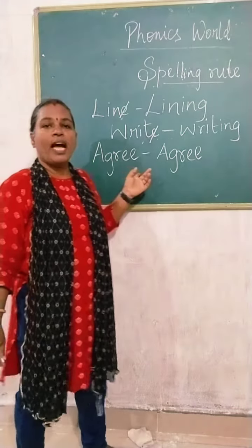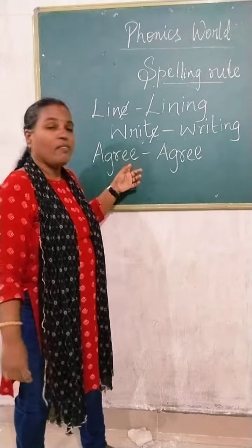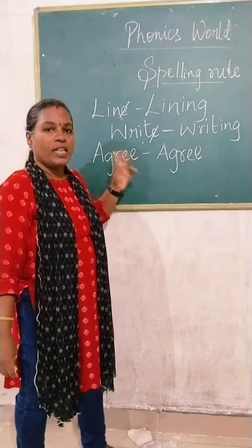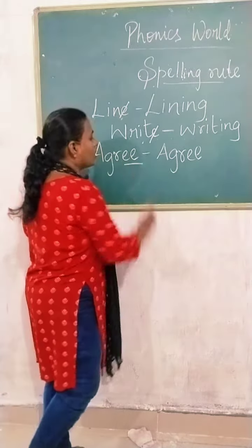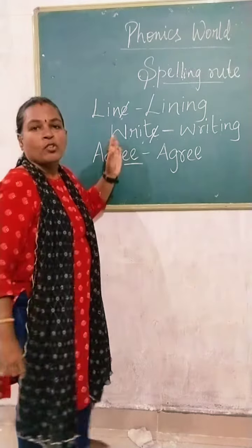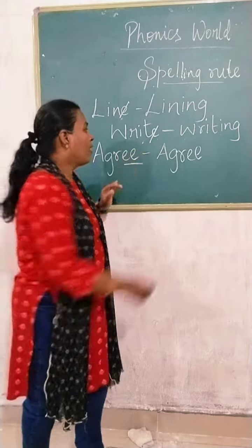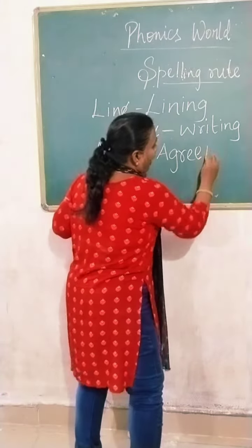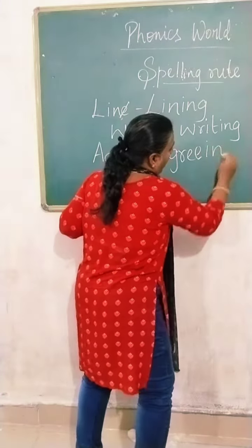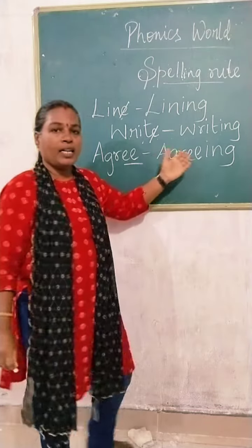The final word we have is 'agree.' Agree has a double E. So what do we do with this? Don't remove the E. As it is, you write 'agree' and add 'ing' — 'agreeing.'